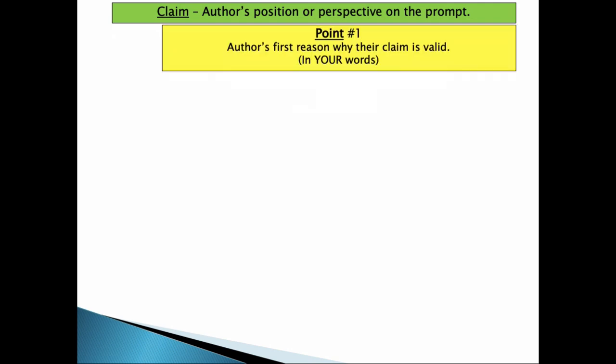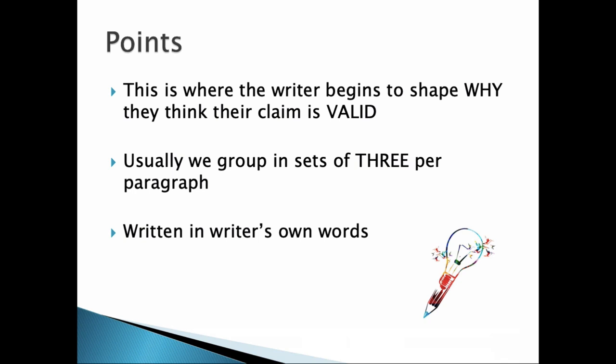Once we've made that overall claim, we then begin to craft the point. This is where the author gives their first reason why their claim is valid, and again, this would also be in the writer's own words. And so these three points, which are interspersed in the paragraph, is where the writer begins to shape why they think their claim is valid. This is where the writer starts to say, here are the big three reasons why the kitchen table is the best place to do homework. It could be that it is centrally located so they can get help from parents when they need it. It could be that it is a well-lit area in order to see their texts. It could be that it is far away from annoying siblings.